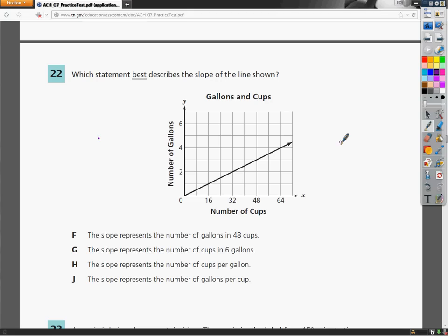Welcome. This is the 7th grade TCAP practice test for math. Question number 22. Which statement best describes the slope of the line shown?